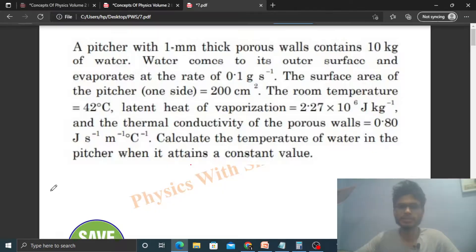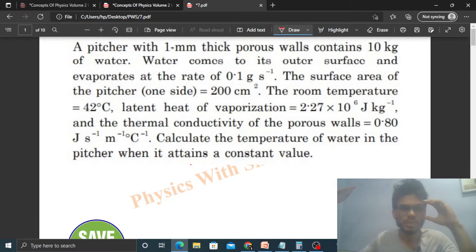Hi everyone, let's discuss this interesting problem. A pitcher with 1mm thick porous walls contains 10 kilograms of water. Water comes to its outer surface and evaporates at the rate of 0.1 gram per second. The surface area of the pitcher is 200 centimeter square.